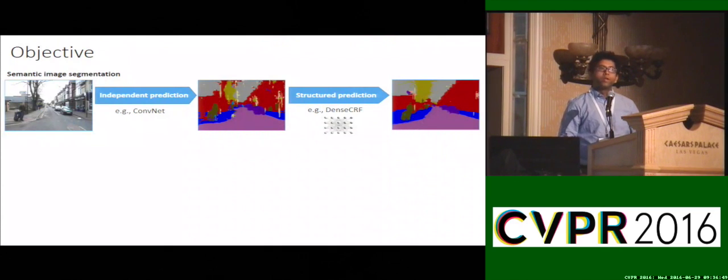Single image semantic segmentation is a very popular and important topic. On a high level, all approaches have a similar pipeline. Given a single image, you pass it through your favorite classifier, maybe some conv-nets, which outputs for each pixel an independent prediction of the semantic label. Given these pixel-wise independent predictions, you can use them in a structure prediction pipeline which assigns globally a semantic label for all the pixels.